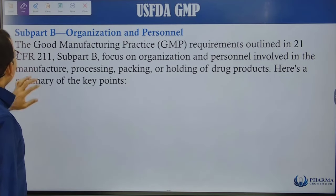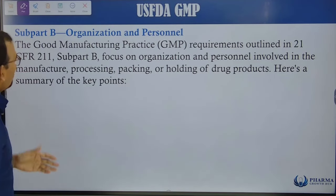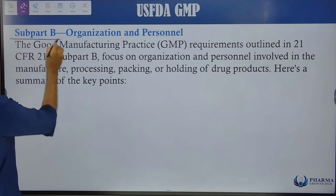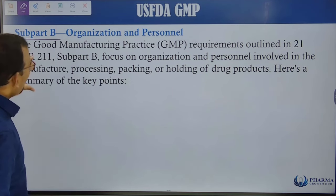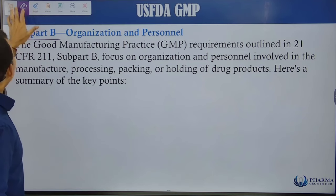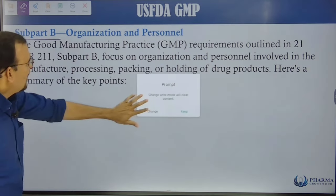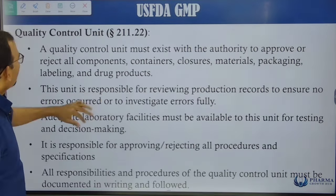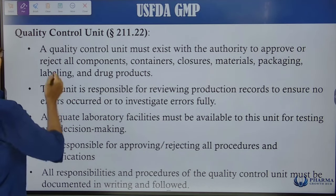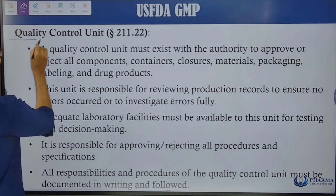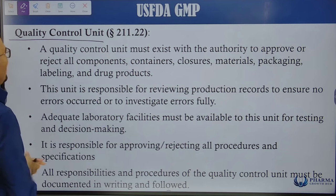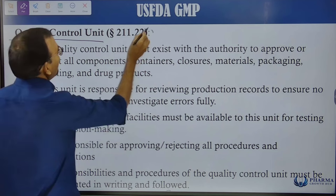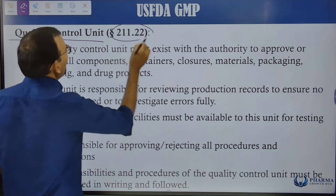Subpart B talks about Organization and Personnel. Let us understand this very important aspect. The first part of the organization is the Quality Control Unit.